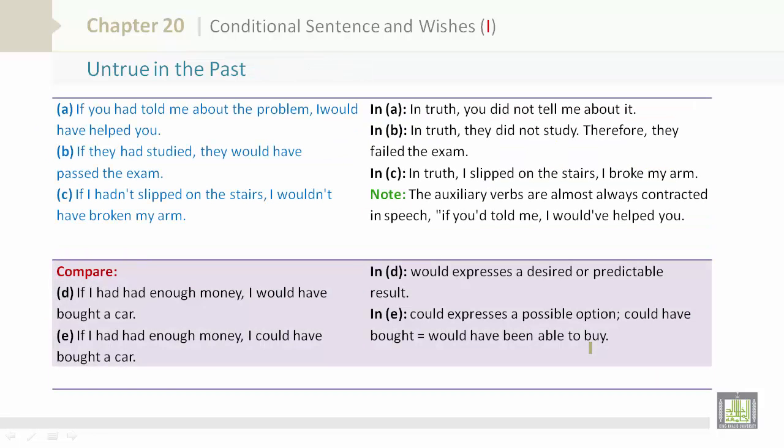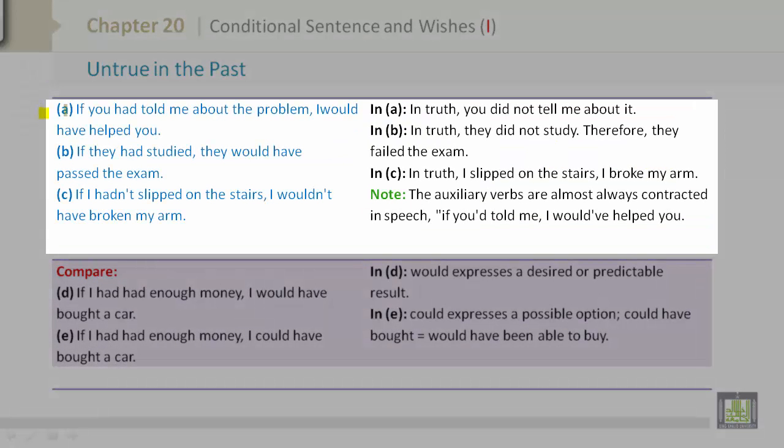Untrue in the past. Let's look at A: If you had told me about the problem, I would have helped you. In truth, you did not tell me about it. Let's look at B: If they had studied, they would have passed the exam. In truth, they did not study. Therefore, they failed the exam. C: If I hadn't slipped on the stairs, I wouldn't have broken my arm. In truth, I slipped on the stairs. I broke my arm.